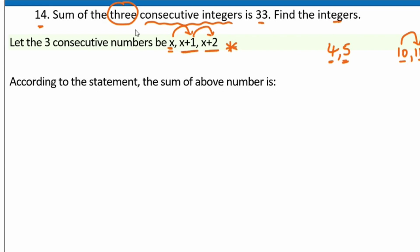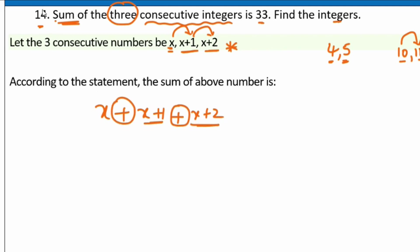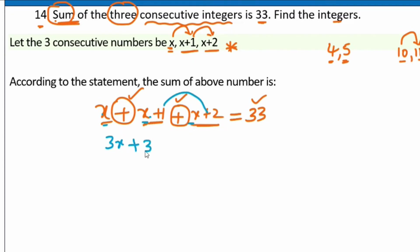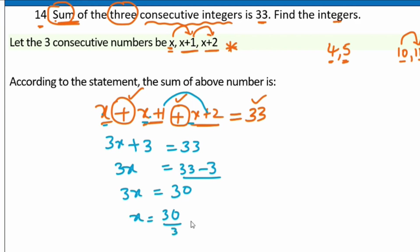Their sum equals 33: x plus x plus 1 plus x plus 2 equals 33. This gives 3x plus 3 equals 33, so 3x equals 30, and x equals 10. The three consecutive integers are 10, 11, and 12.